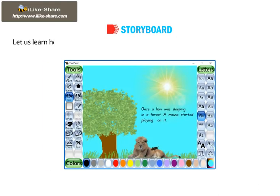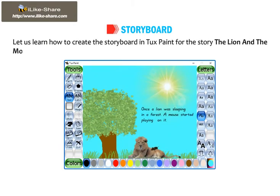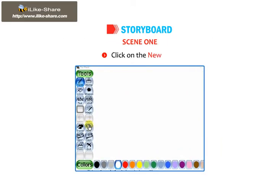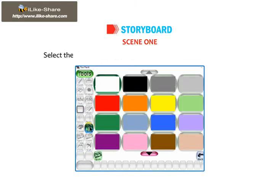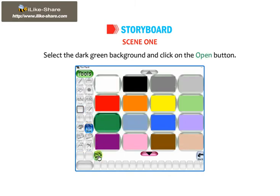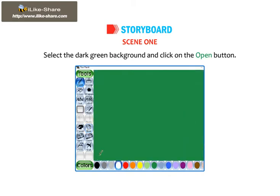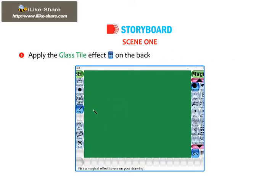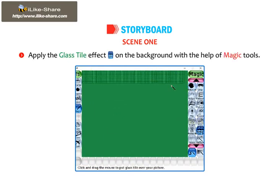Let us learn how to create the Storyboard in TuxPaint for the story the lion and the mouse. Scene 1: Click on the New tool. Select the dark green background and click on the Open button. Apply the glass style effect on the background with the help of Magic tools.